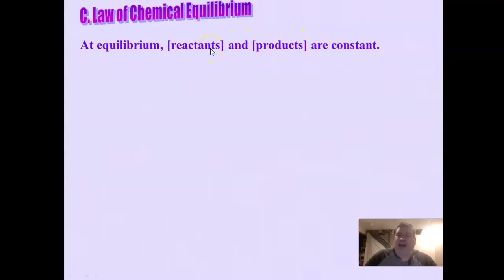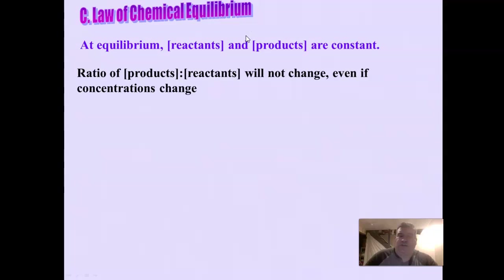We also know that you can add or remove reactants or products, or play around with temperature and pressure to change an equilibrium — to force it to shift towards the reactants or the products. The question is, how far does it shift when you cause an equilibrium to shift? As it turns out, the ratio between the products and the reactants never changes.